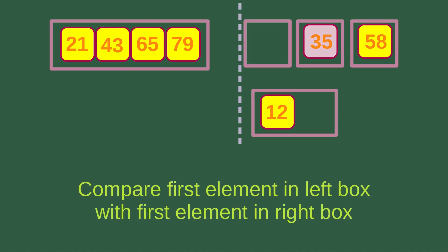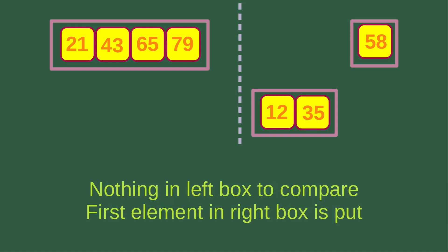Then we compare the first element in the left box with the first element in the right box again. The left box has nothing, while the right box has 35. So we have nothing in the left box to compare, and we simply put 35 into the merging box.